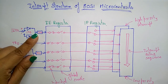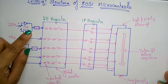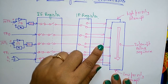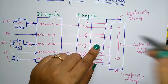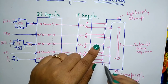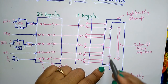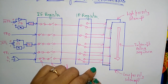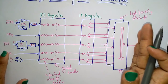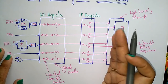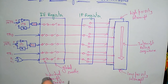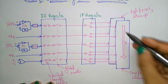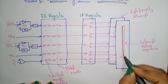The priority register decides which interrupt has to be sent to the CPU. Before sending to the CPU, the interrupt priority register sends the interrupts based on priority. Higher priority interrupts are stored here and lower priority interrupts are stored here. If two interrupts have the same priority level, the interrupt polling sequence decides which interrupt is sent to the CPU.